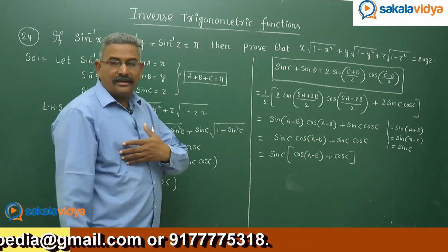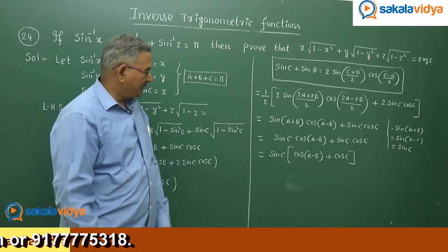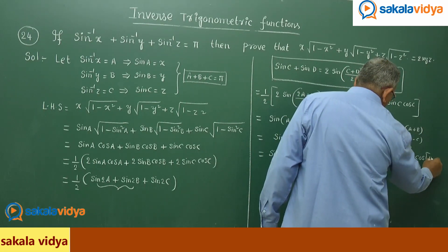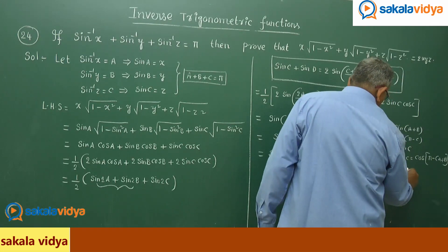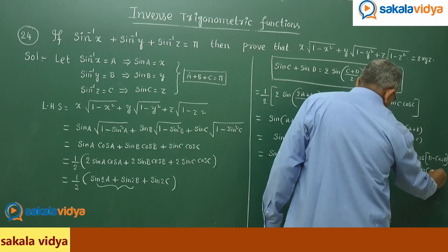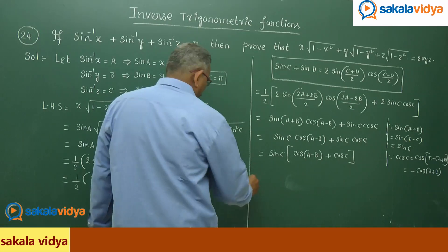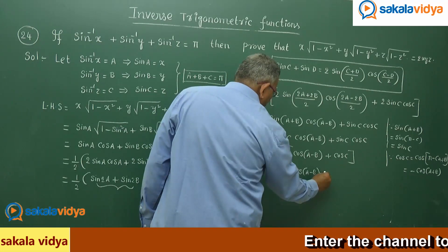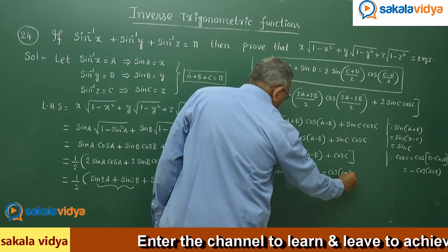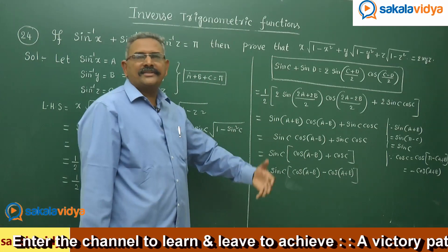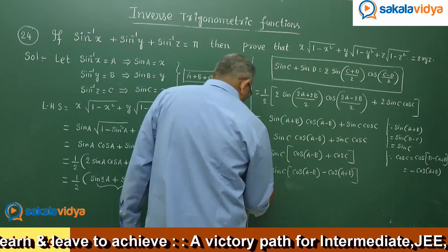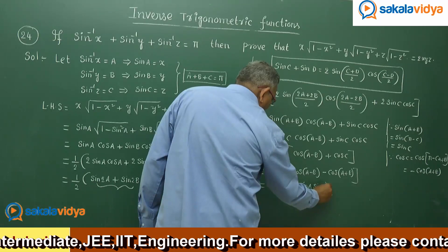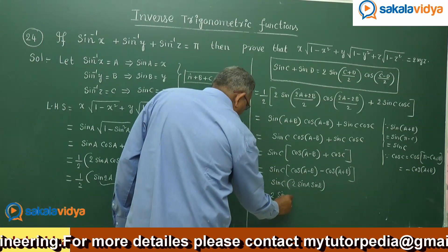Again, we write cos C in terms of A + B. Since C = π − (A+B), cos C = cos(π − (A+B)) = −cos(A+B). So the expression becomes sin C · [cos(A−B) − cos(A+B)]. Using the formula cos(A−B) − cos(A+B) = 2 sin A sin B, this gives sin C · 2 sin A sin B = 2 sin A sin B sin C.